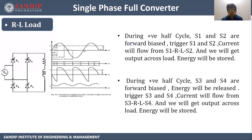Let's understand this waveform. During the positive half cycle we trigger S1 and S2 and get output voltage. The inductor stores energy, and in the next half cycle before triggering S3 and S4, the inductor dissipates energy — shown as negative voltage in the waveform. Once S3 and S4 are triggered, we get the output voltage because of them. Then during the positive half cycle, the inductor dissipates, and after complete dissipation we trigger S1 and S2 again. This is the output current waveform for the single phase full converter with inductive load.